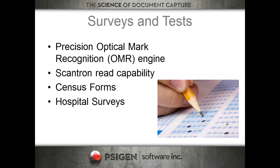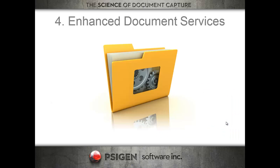For surveys and tests, we've seen a really big push towards Scantron-style processing. There are a lot of government surveys being processed, and we use our optical mark engine to read those bubble forms, process them, and post them. These range from government census forms to hospital surveys that are now part of the Affordable Care Act. So you've got a strong survey and test processing engine built right into the product.